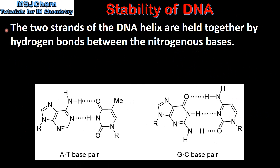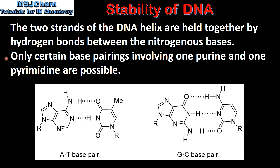The two strands of the DNA helix are held together by hydrogen bonds between the nitrogenous bases. Only certain base pairings involving one purine and one pyrimidine are possible. Adenine forms two hydrogen bonds with thymine and guanine forms three hydrogen bonds with cytosine.